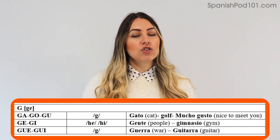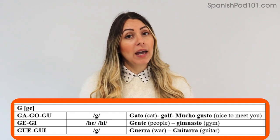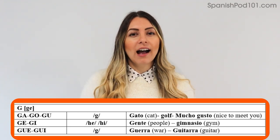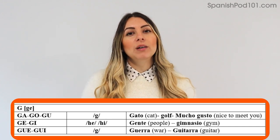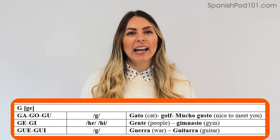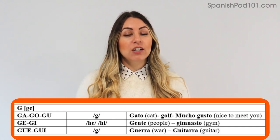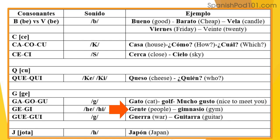But if we have G-E or G-I, then it becomes like a soft H sound. In Spain it is a lot stronger — GE, GI are pronounced with a very strong H. For example: gente, gimnasio.